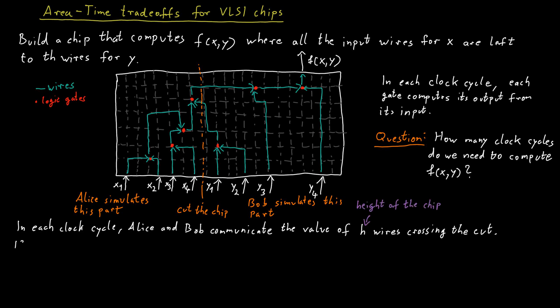Now, if the chip computes a function f in at most t clock cycles, then we know that the total communication that can happen is h times t. And we know that this needs to be at least as large as the communication complexity for the function f we want to compute. So h times t has to be at least D of f.